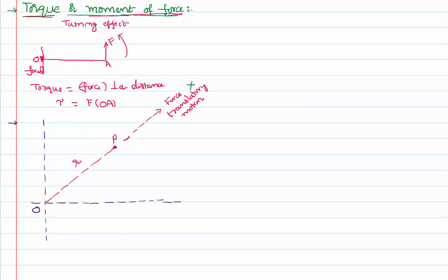We shall apply the force at a certain angle. Let us say we apply the force at an angle theta to the original direction. This will produce a turning effect and obviously turn the body. The turning effect equals the applied force multiplied by the perpendicular distance from the fixed point. It is clear that r is not the perpendicular distance here, so we need to find the actual perpendicular distance.